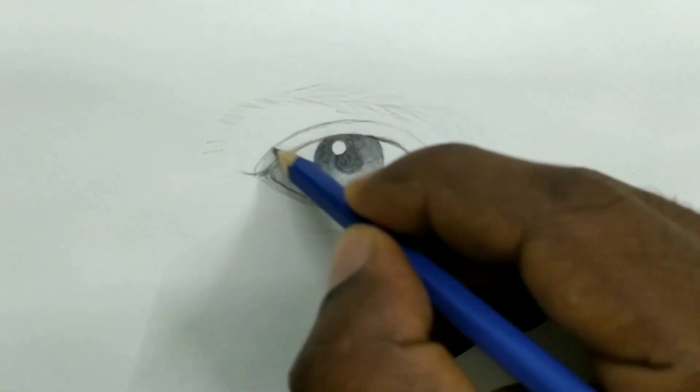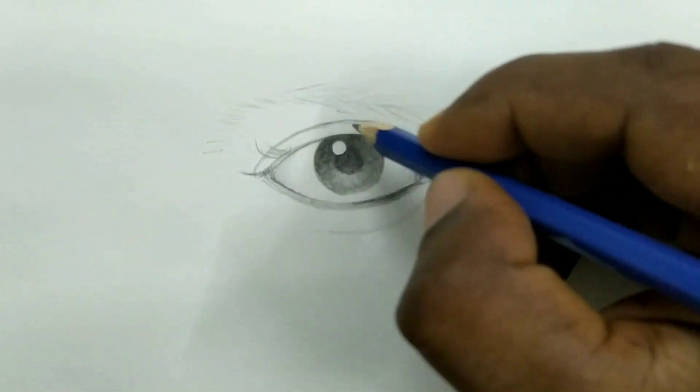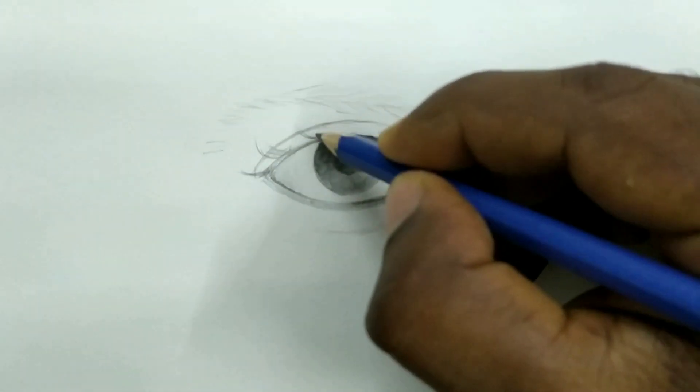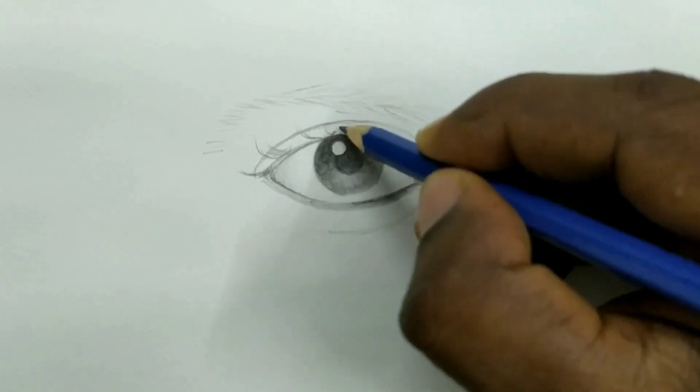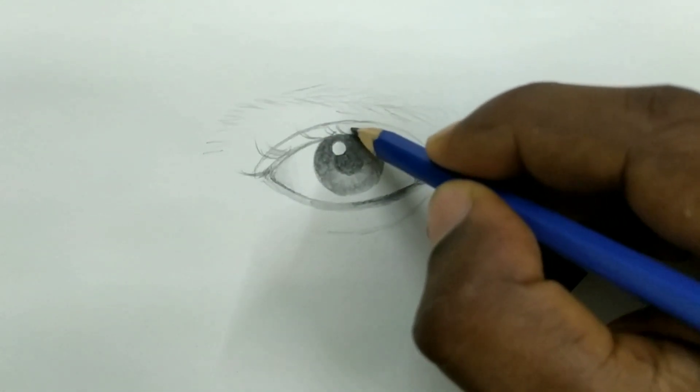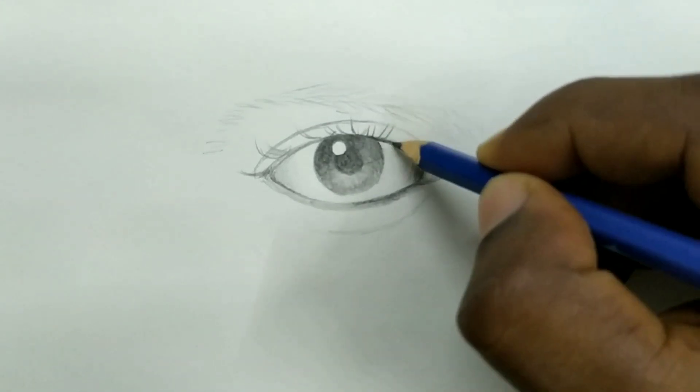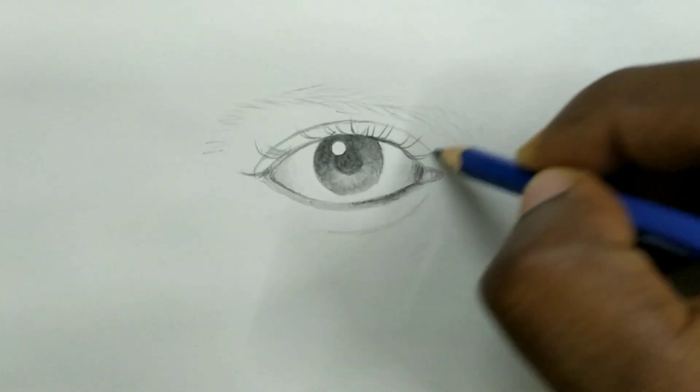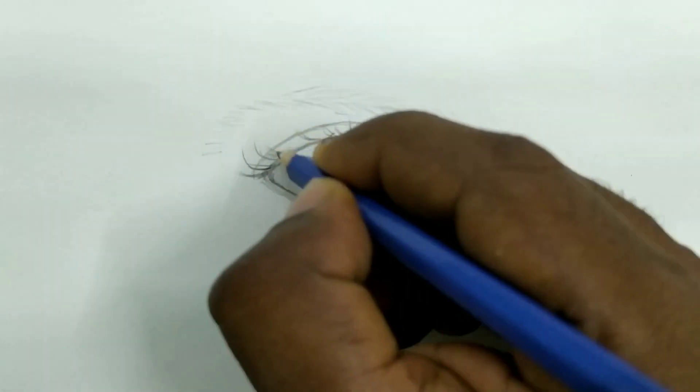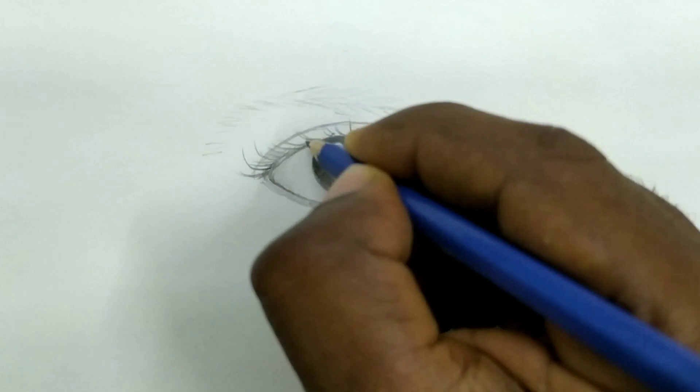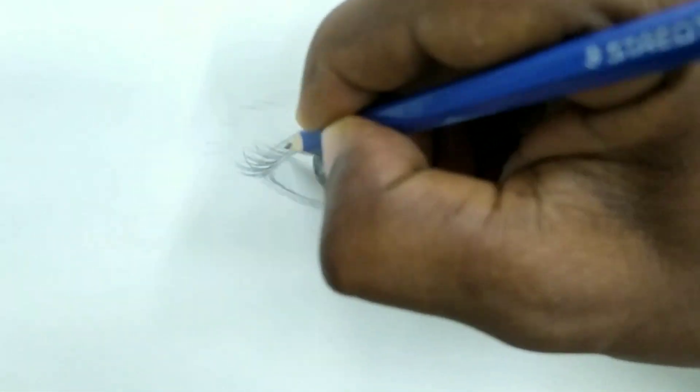Now I am making eyelashes, direction of the hair, that is very important. Different part it will be different direction. Make one or two lashes at different position so that will help as making more. Keep adding more and more.